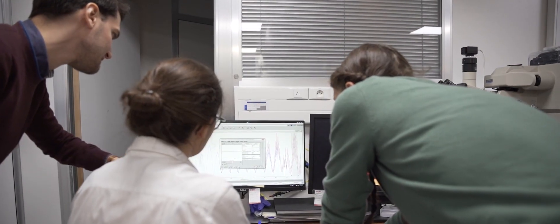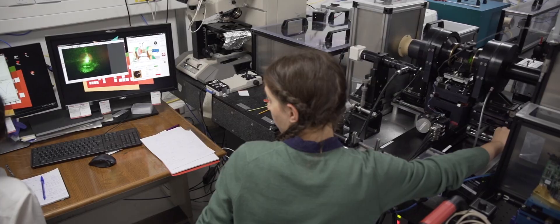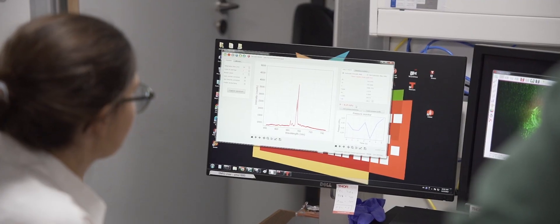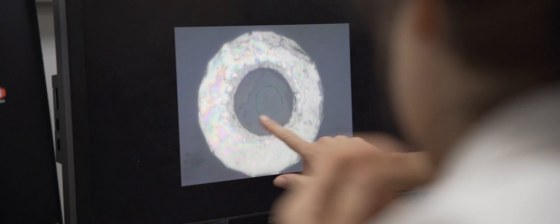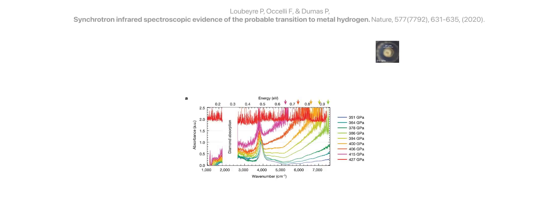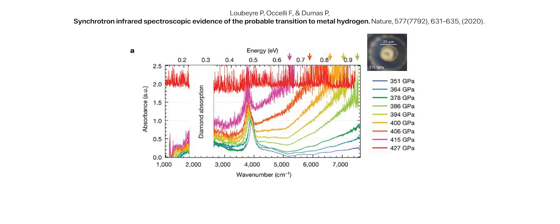With pressure and infrared spectroscopy, we can investigate what happens to materials at these very high pressures. Typically we can have phase transformations, a liquid that becomes solid for example, or also electronic phase transitions such as from an insulator to metals.